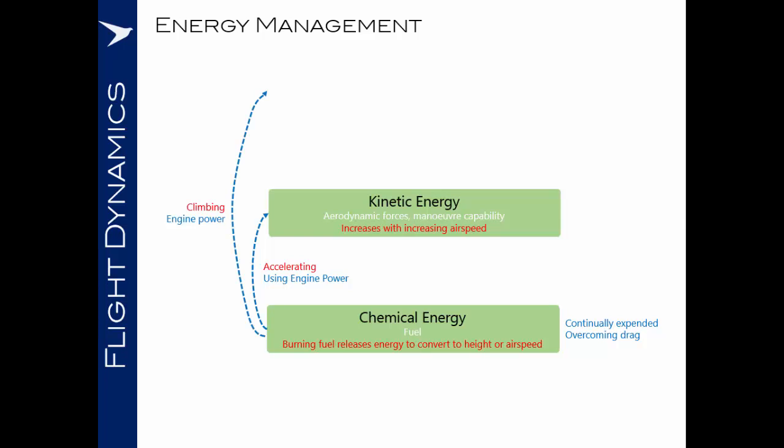Equally, we can use the chemical energy to climb the airplane using engine power, overcoming the force of gravity to give us potential energy. So potential energy is governed by the height above the terrain and increases with increasing altitude. It's potential energy because we have the potential from the altitude to convert into kinetic energy. We can do this through diving the airplane, trading our height for speed.